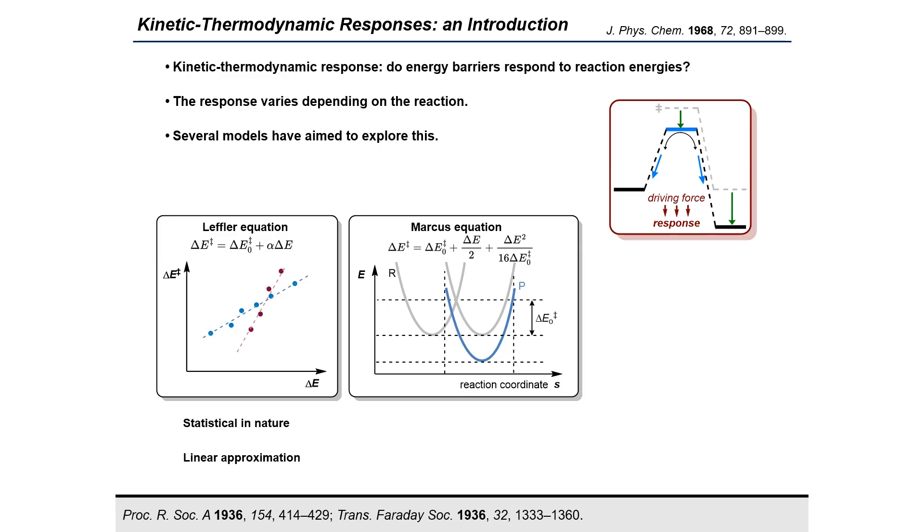The Marcus equation assumes that the reactions in the products distort symmetrically, as the parabolas have the same amplitude. This makes the physical meaning of the response harder to interpret.